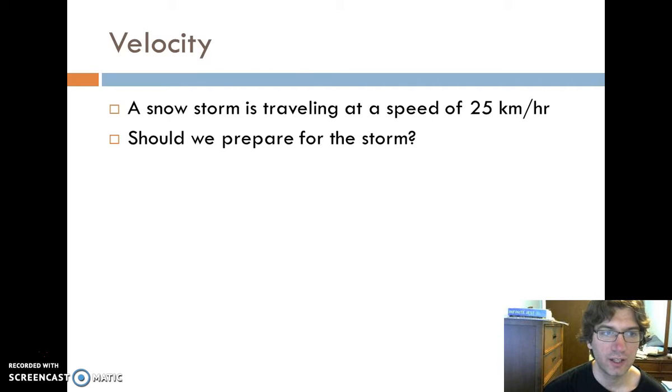Next concept is velocity. Velocity is related to speed, but it is very different than speed. You need to realize that speed and velocity are not equivalents. You cannot substitute one for the other. However, velocity does incorporate speed. So if I'm going to ask you the question that a snowstorm is traveling at a speed of 25 kilometers per hour, that's pretty fast for a snowstorm. Should you prepare for that storm? You don't have enough information to answer that question. You don't know what direction that storm is going. Maybe that storm is going away from you and it's already past you. Maybe it is not even anywhere close to you. If that storm is happening over in Montana, why do we care over here in Pennsylvania? It doesn't matter because we do not know the direction the storm is going. And velocity is going to solve that for us.